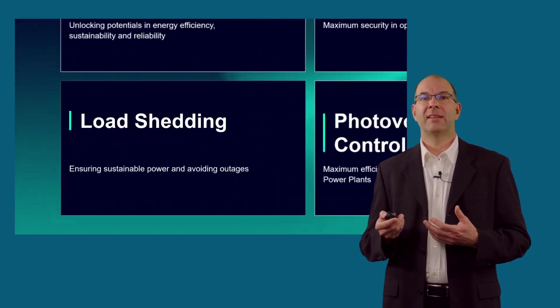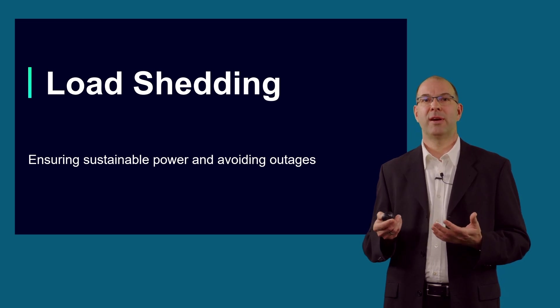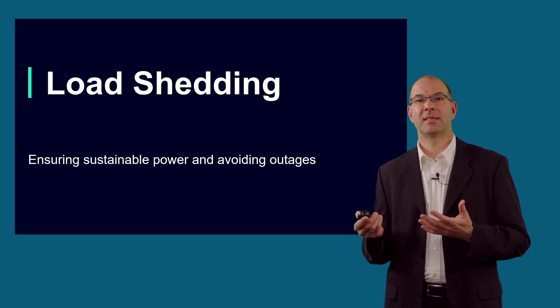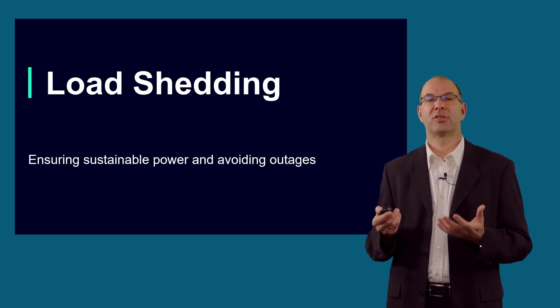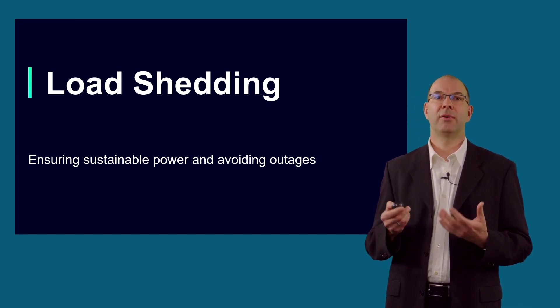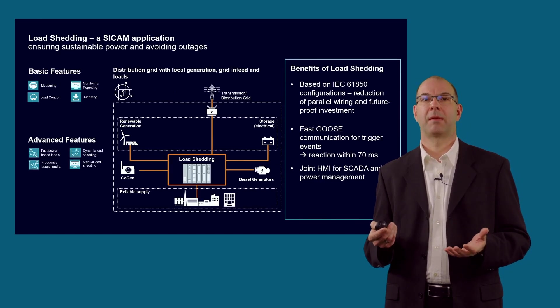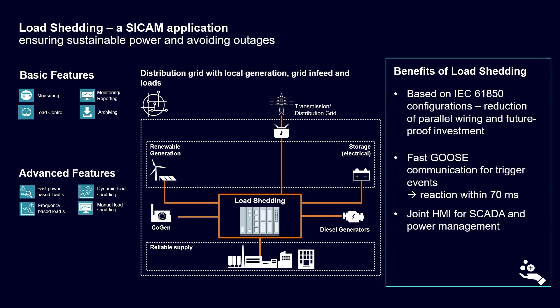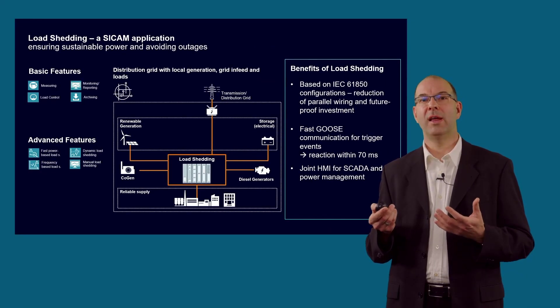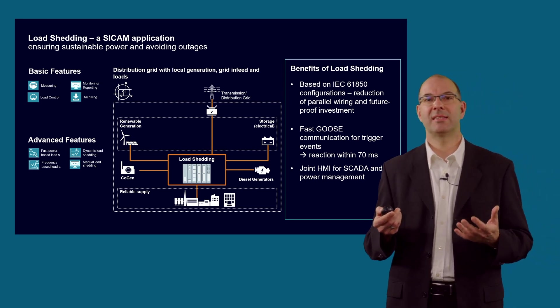While in the case before the site's generation assets typically provide enough operating reserve to handle unexpected loss of generation, there are also other scenarios where further actions are required to ensure grid stability and continuous supply — and here our load shedding application comes into play. Fast or dynamic load shedding is typically used in large industrial grids with single generators in a multi-MW range. It supervises the electric generation or grid infeed on one side, while continuously monitoring the load's demand on the other. The target is to ensure continuous balance of power — if one generator trips, it immediately sheds the equivalent amount of load, all happening within maximum 70 milliseconds using IEC 61850 GOOSE communication.